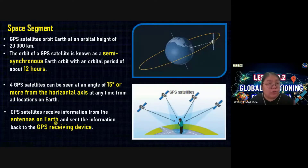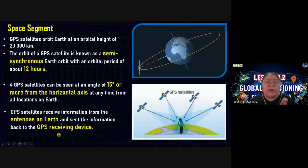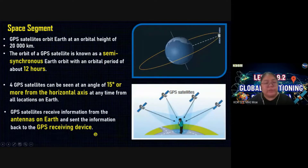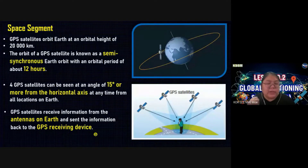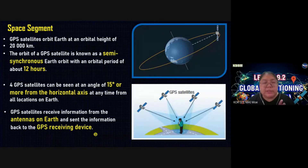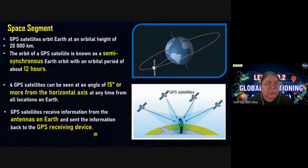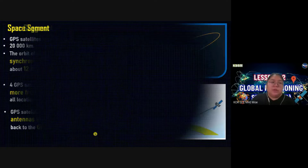The GPS satellite receives information from the antenna on the Earth — that antenna on Earth is the control segment — and sends the information back to the GPS receiving device. So it receives the signal from the Earth first, gets the info, then sends it back to the receiving device. This is the space segment function: receive, generate the info, and send back to you.